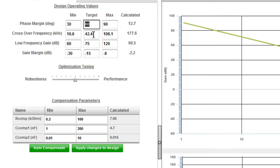Let's set a target for phase margin of 60 degrees and set our target crossover frequency at 80 kHz. Then, just click Auto Compensate.